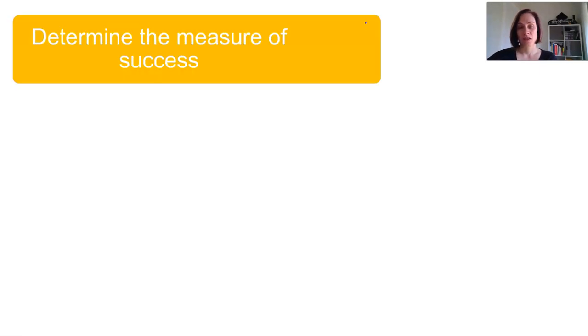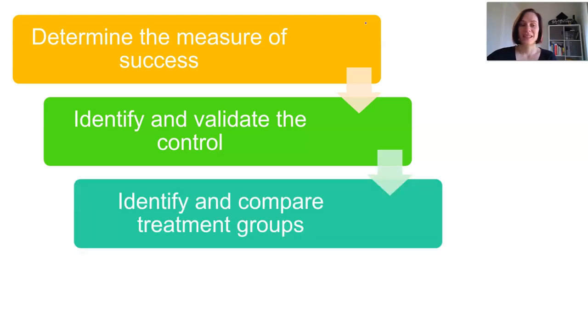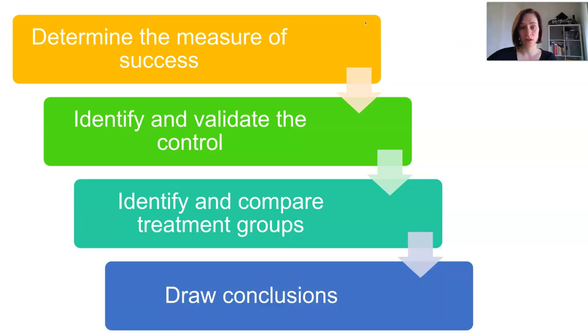First, we're going to determine the measure of success. What is the measure of success we're looking for? We have to identify and validate the control. All of these tests should have some kind of control. We then need to identify the treatment group and compare it to what the control did, and then we need to draw some conclusions about whether something was successful or not.